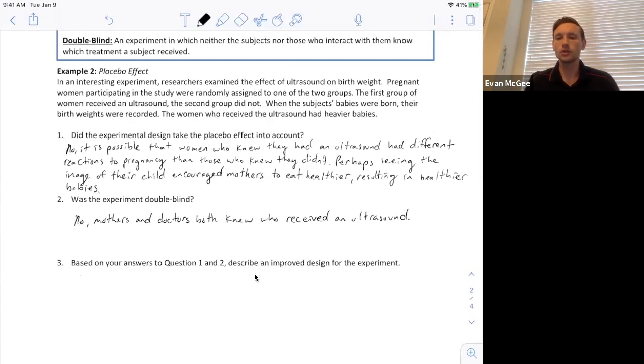So based on your answers to question one and two, describe an improved design for the experiment. So based off of one and two, what they're wanting us to do is implement some type of design that accounts for potential placebo effect. And the only way we can do that is if we make it a double blind experiment. So what we would have to do is have all the mothers be treated as if they were having an ultrasound, but for some of the mothers, the machine's not turned on. So they think they're getting an ultrasound, but in reality they're not. And in order for this to work, the monitor would have to be turned away so that the mothers couldn't see whether they were or were not receiving the ultrasound. That way we'll know the only difference was if they received the ultrasound or if they did not.